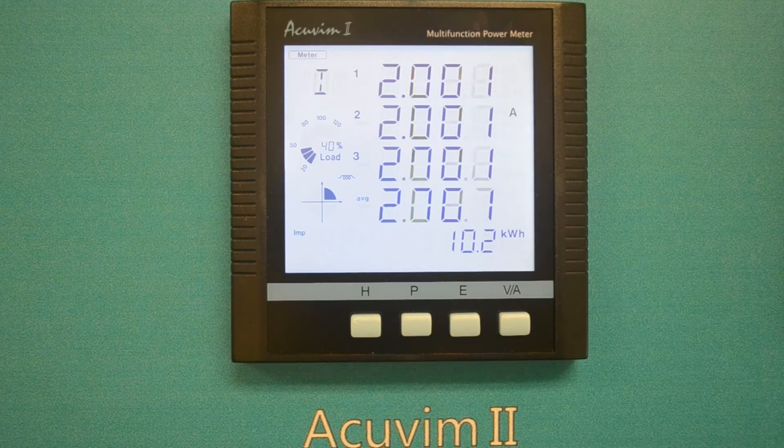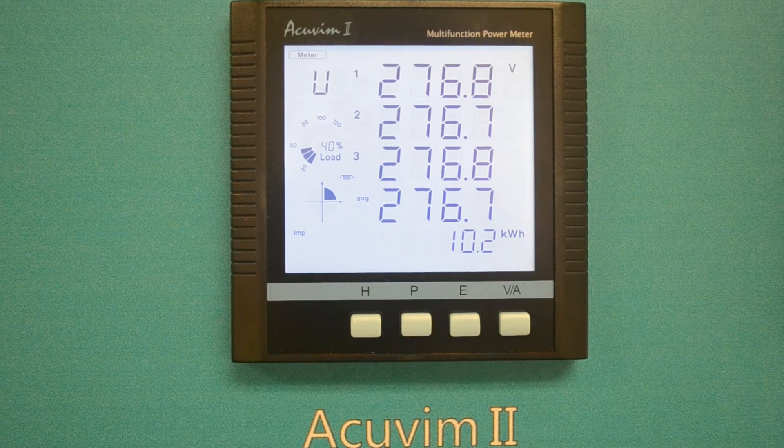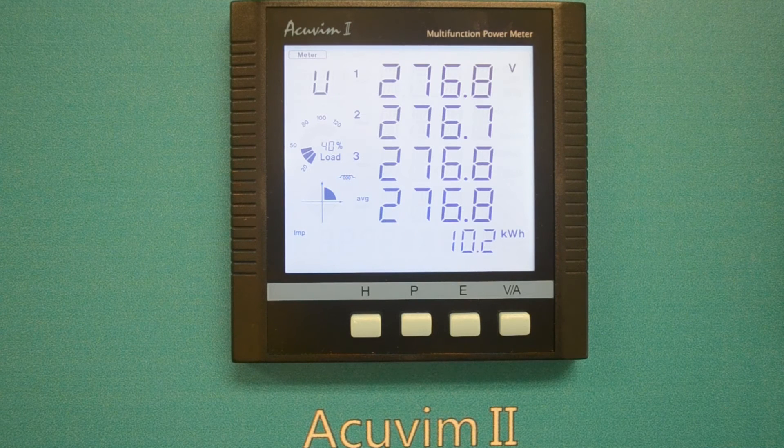Repeatedly pressing the VA key will eventually bring you back to the first screen of the main display, which is phase voltage information.